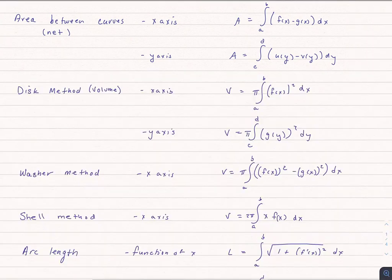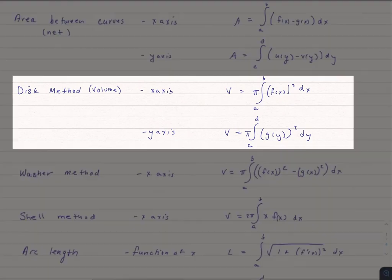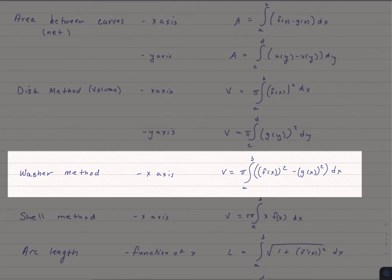We also talked about using the disk method if we were spinning a function around an axis, whether the x-axis or the y-axis. We also talked about the washer method for x and y, but I've only written this out for x.